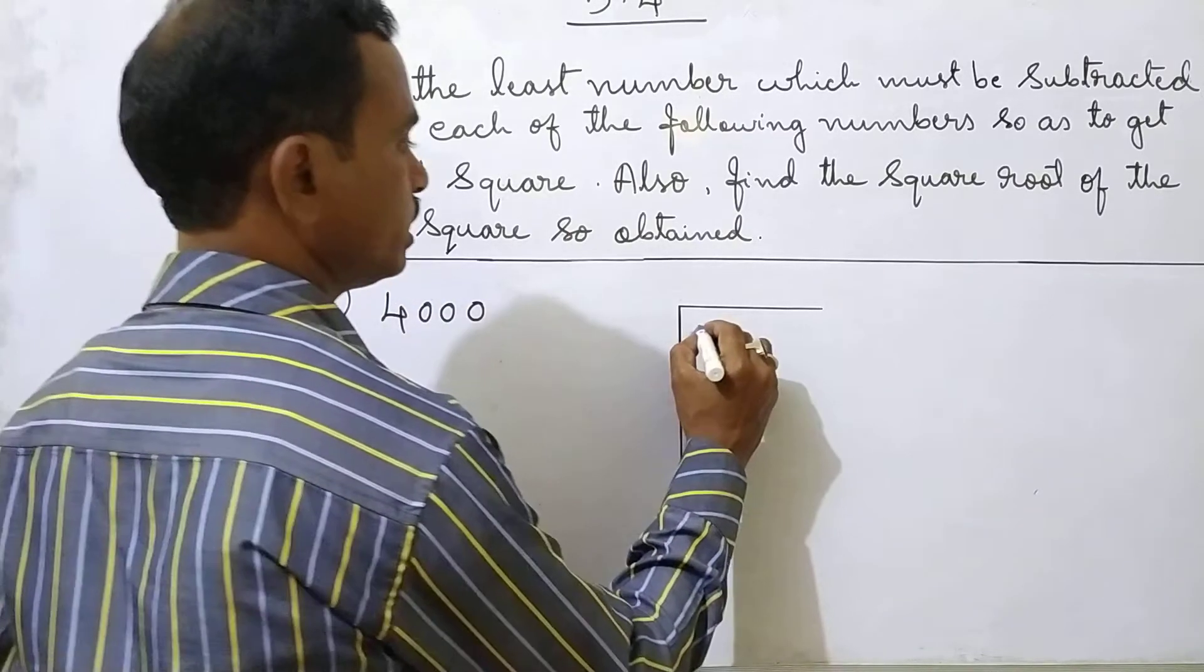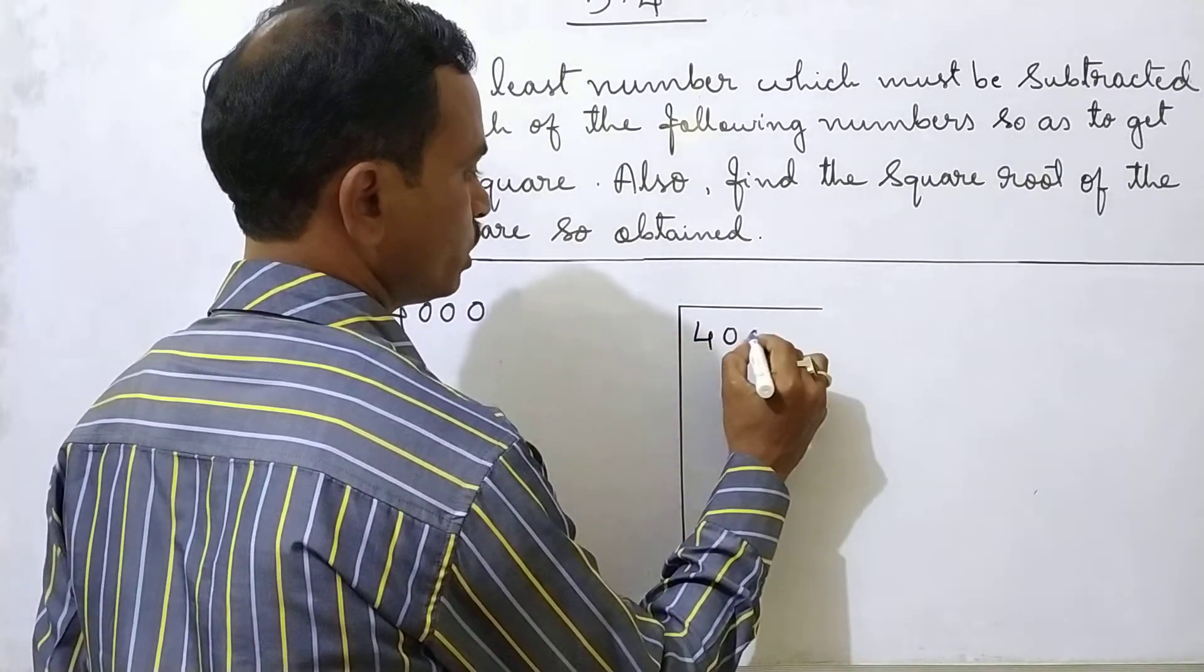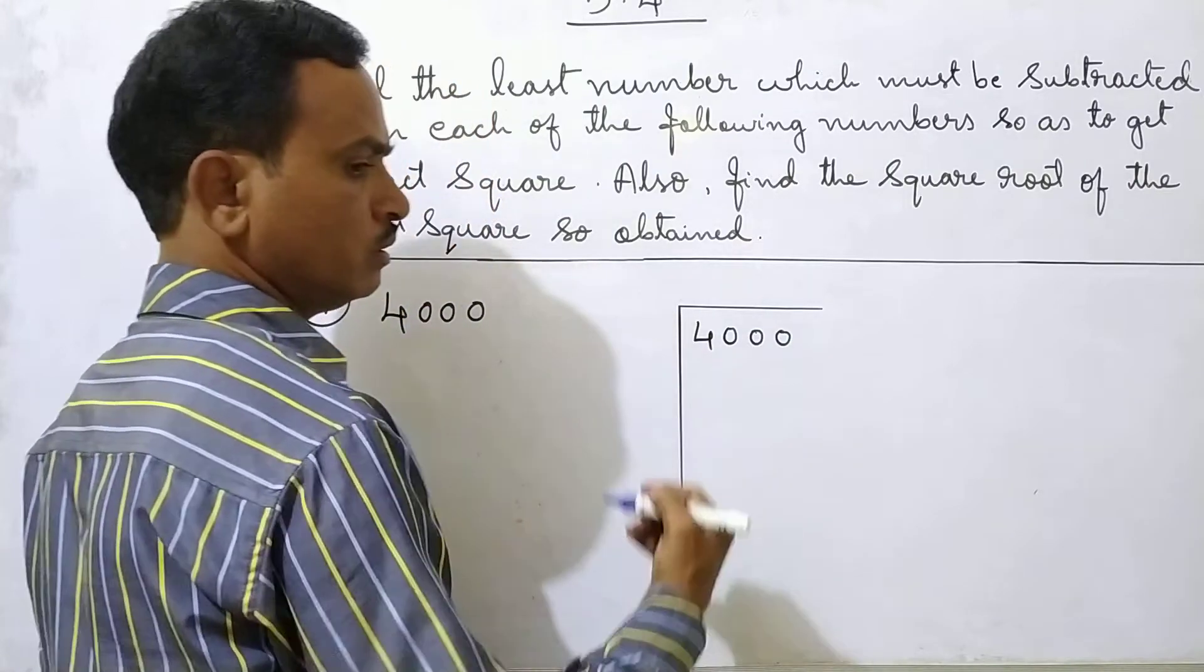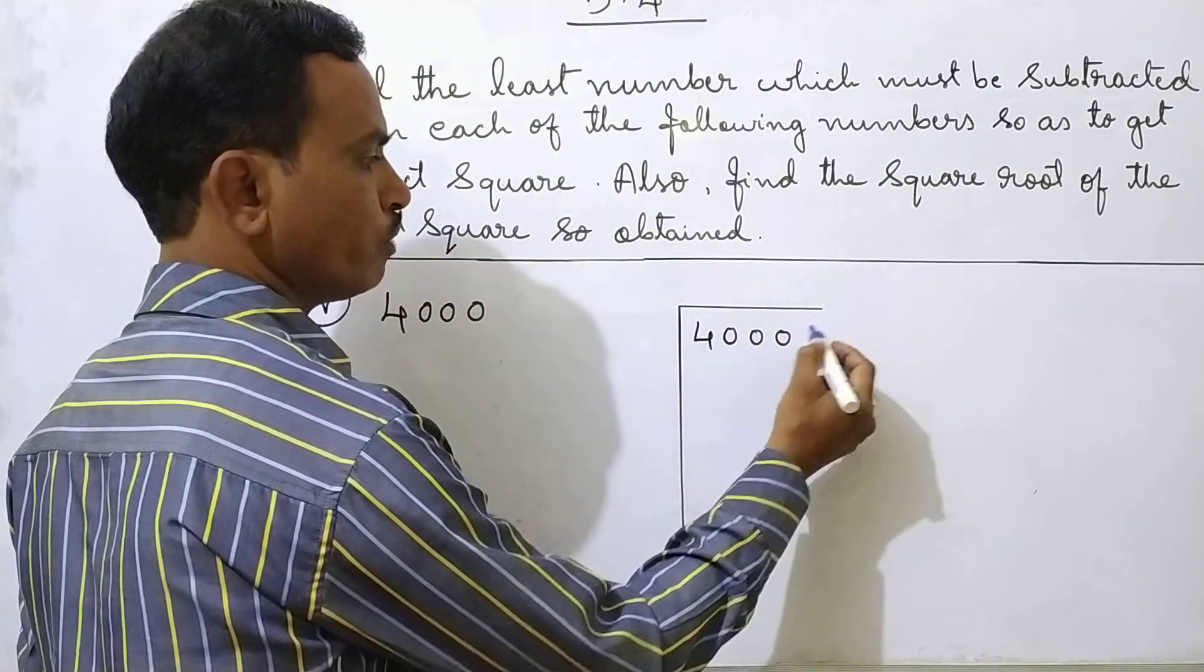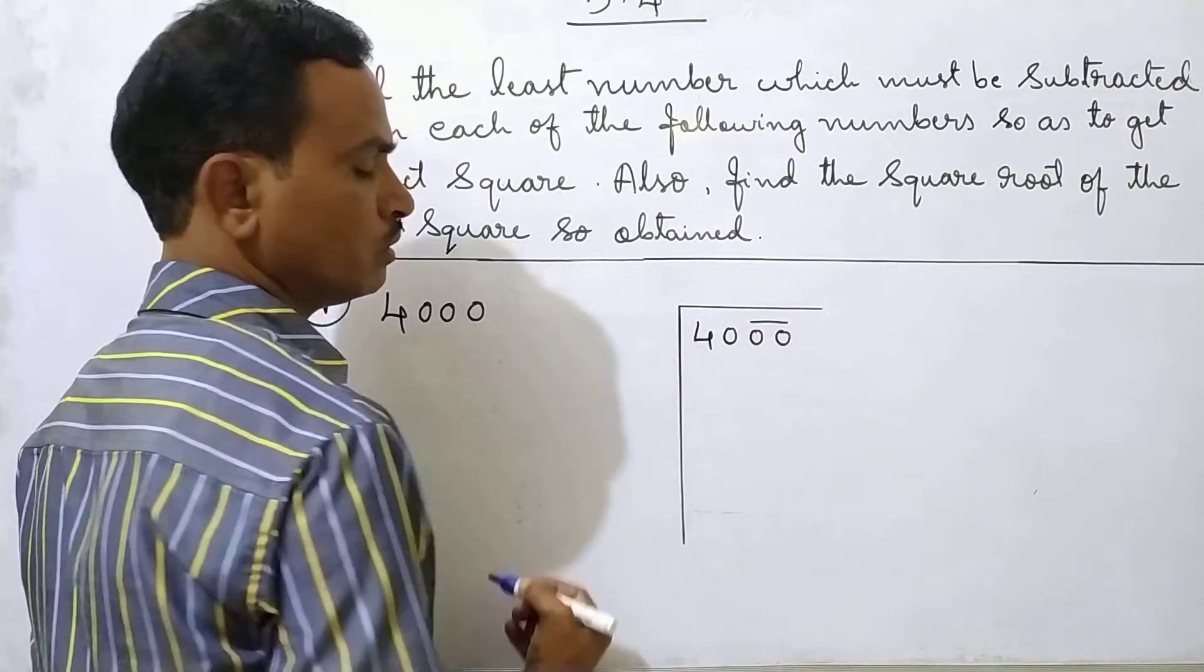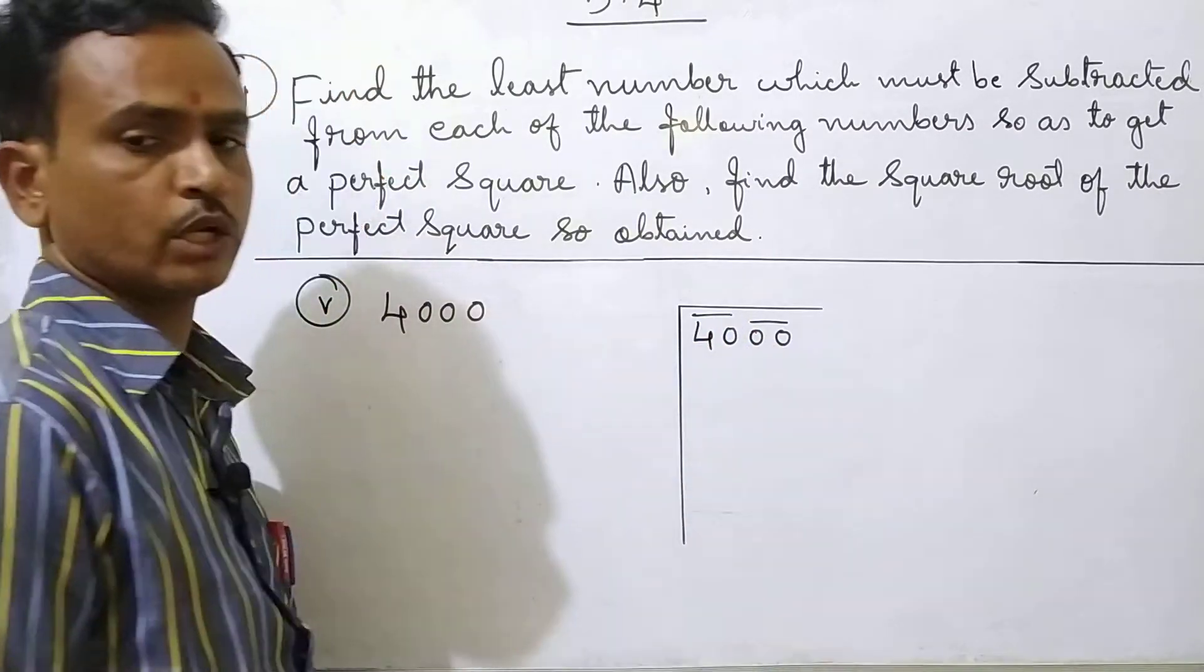4000 is given here. 4000 you should write. Now you should make groups. Start from right hand side. That one group. The next second group.